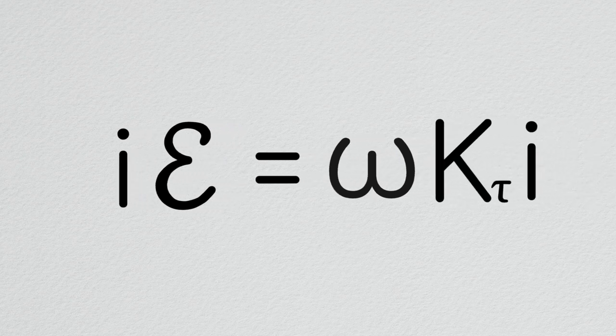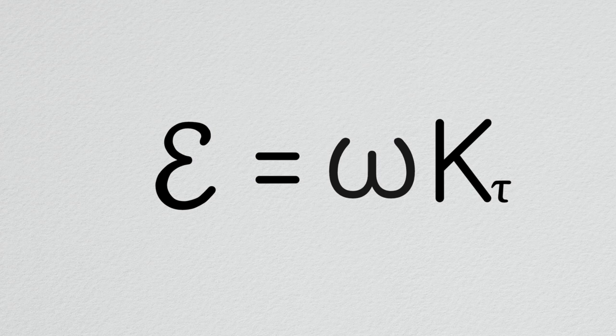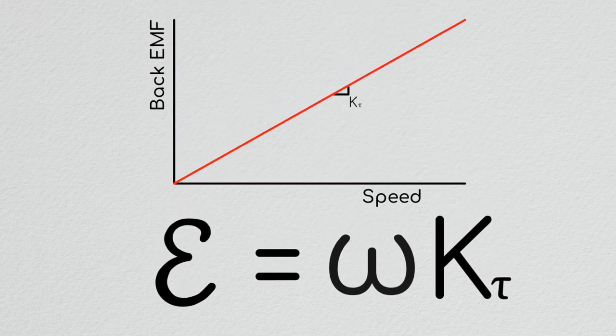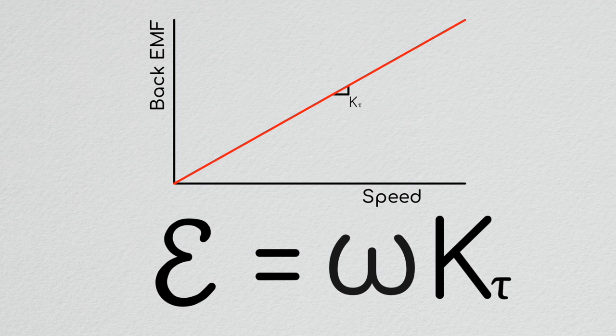Including our earlier equation for torque, we see therefore that the back EMF produced is equal to the motor's angular velocity multiplied by the torque constant. This means that if the velocity of the motor increases, the back EMF will go up proportionately.